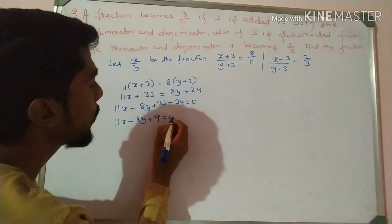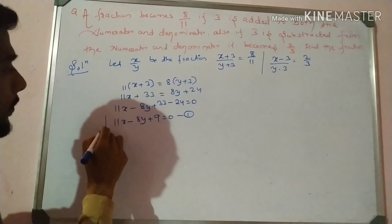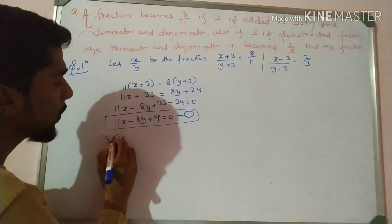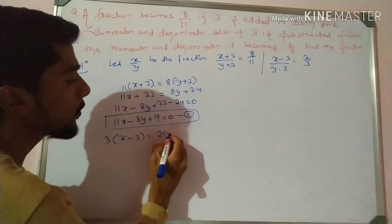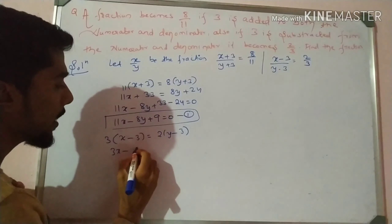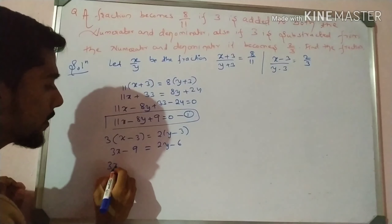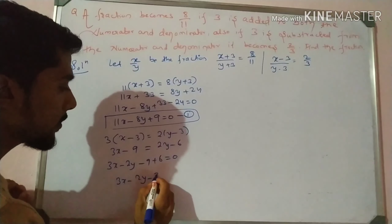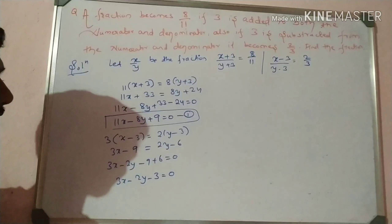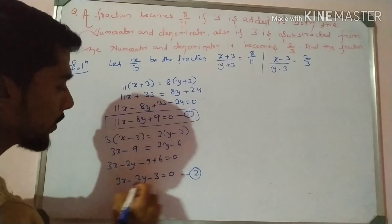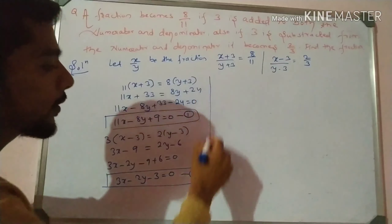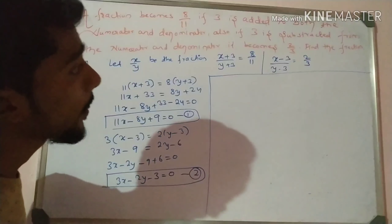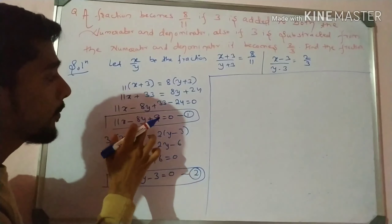A fraction becomes 8 by 11 if 3 is added to both the numerator and denominator. Let x over y be the fraction — x is the numerator and y is the denominator. If we add 3 to the numerator and 3 to the denominator, we get 8 by 11. In the second case, if 3 is subtracted from the numerator and the denominator, we get 3 by 2.